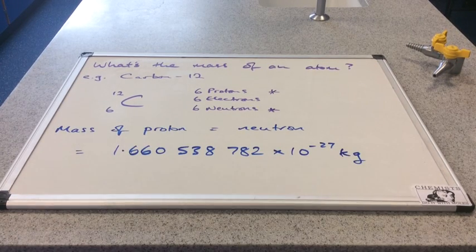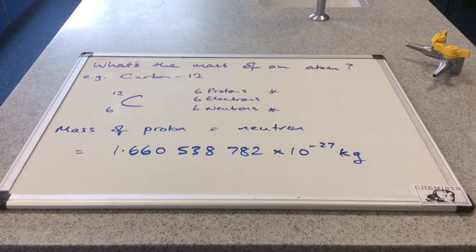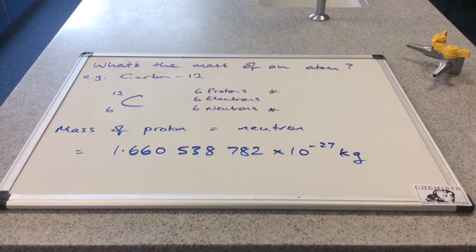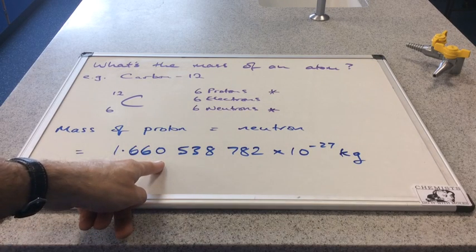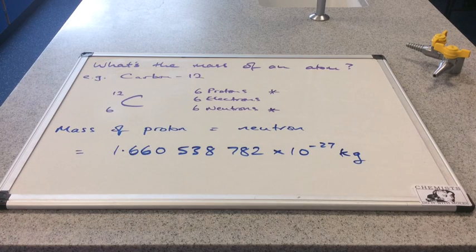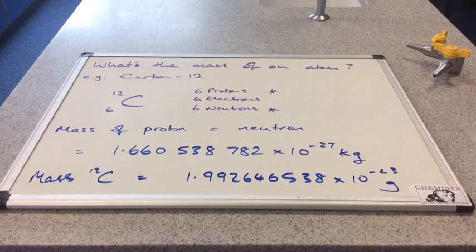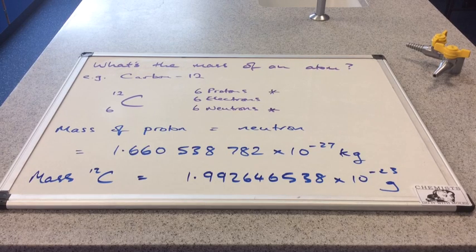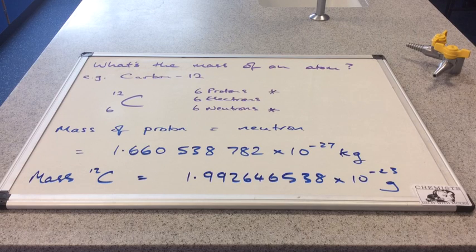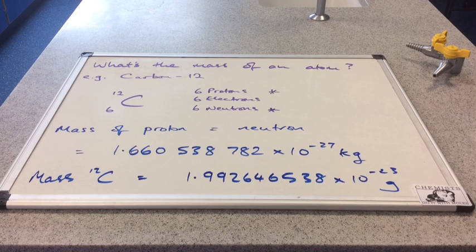The mass of a proton is the same as the mass of a neutron and there's the mass written down for you in kilos. So the mass of a carbon-12 atom is going to be this number multiplied by 12 because we've got 6 protons and 6 neutrons. So there's the mass of a carbon-12 atom: 1.992646538 times 10 to the minus 23 grams. So imagine doing a calculation where you have to use numbers like that. It would be a nightmare.